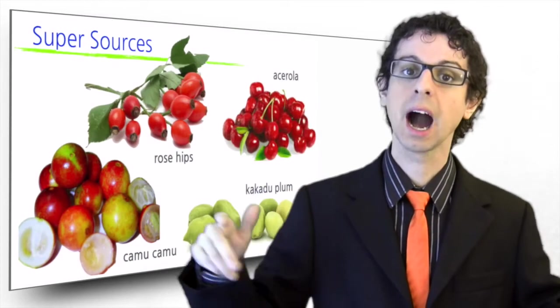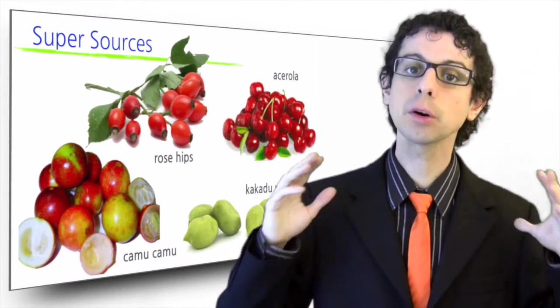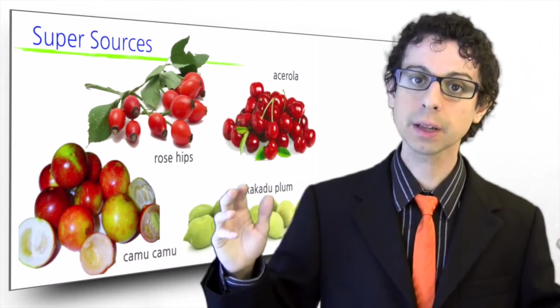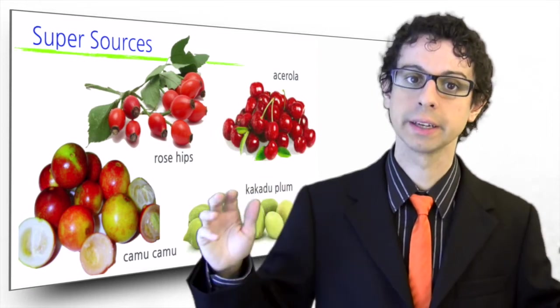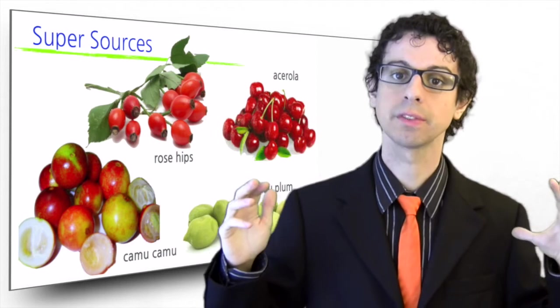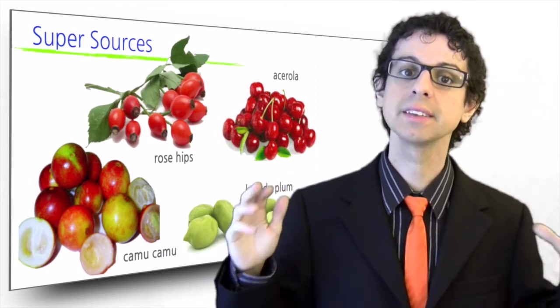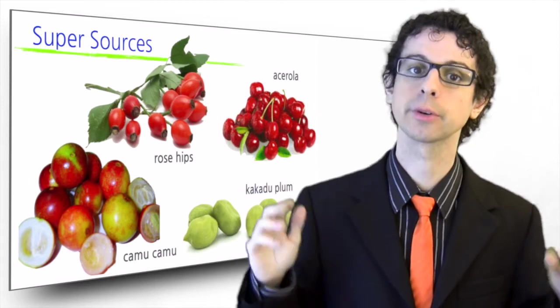Rose hips are exceptionally rich sources of vitamin C, and even more so some tropical fruits such as acerola, camu camu, and the richest of it all, the Australian kakadu plum, which can have up to a hundred times more vitamin C than oranges. That is, an astonishing 5 grams of vitamin C per 100 grams of fruit.